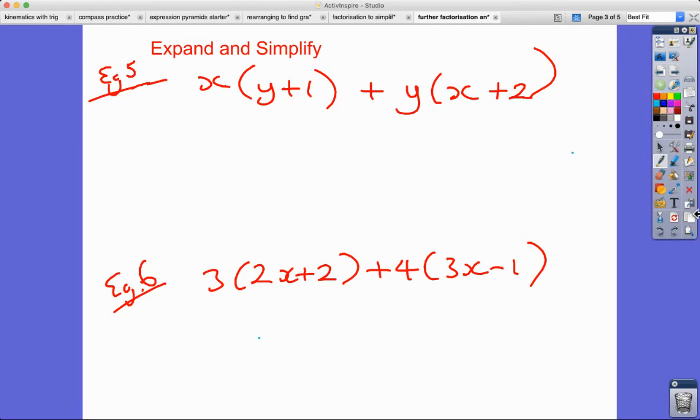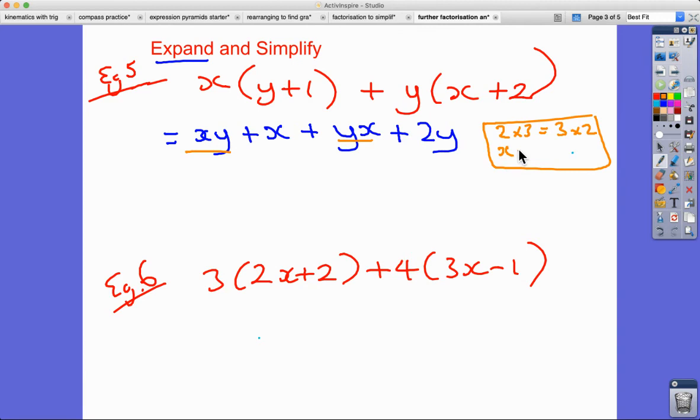Last type. Now we're going to do the opposite process to factorising, which is to expand. This means to actually multiply out the brackets. Last time we were putting the brackets in, taking out the common factor. Now we're going to be expanding it, so multiplying everything inside the bracket by the outside term. So X multiplied by Y gives us XY. X multiplied by 1 is X. Over here, we've got Y multiplied by X, and we've got Y multiplied by 2, which is 2Y. Now please notice that these two are actually the same, because you must agree that 2 times 3 equals 3 times 2. It doesn't matter if we're multiplying what order we write it in. So XY is also equal to YX.